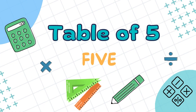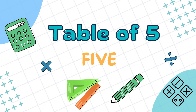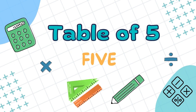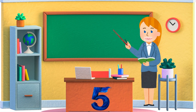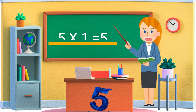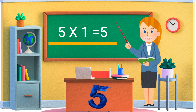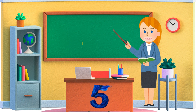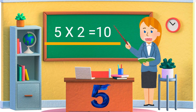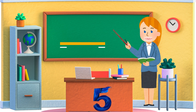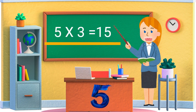Table of 5. 5 ones are 5, 5 twos are 10, 5 threes are 15.